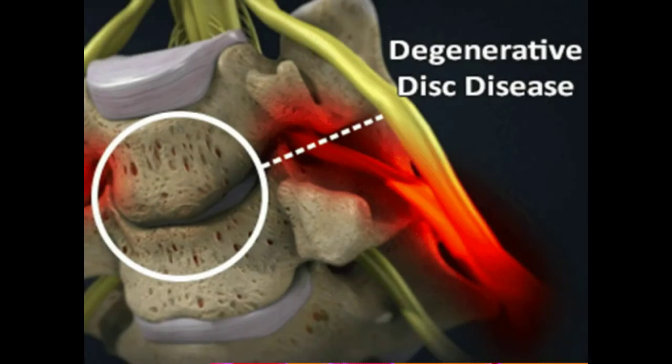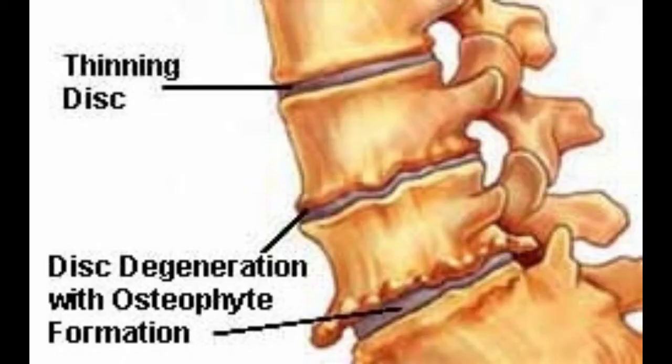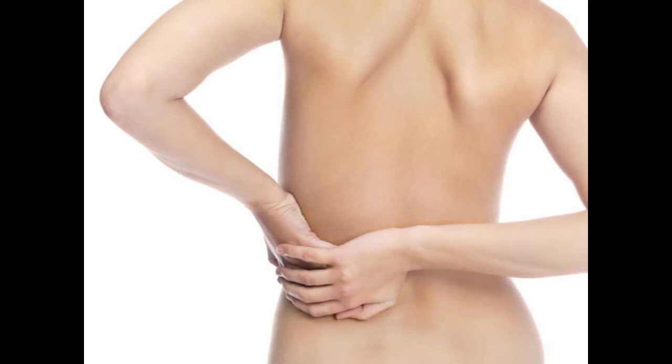As the space between the vertebrae gets smaller, there is less padding between them and the spine becomes less stable. The body reacts by constructing bony growths called bone spurs or osteophytes. Bone spurs can put pressure on the spinal nerve roots or spinal cord, resulting in pain and affecting nerve function.